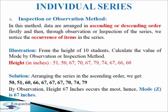From the heights of 10 students, we have to calculate the value of mode by observation or inspection method. Height in inches is given: 51, 50, 67, and so on. We arrange the series in ascending order and get: 50, 51, 60, 66, then 67 three times, 70, 74, and 79. By observation, height 67 inches occurs the most, hence mode is 67 inches. This is how we calculate mode by inspection or observation method.